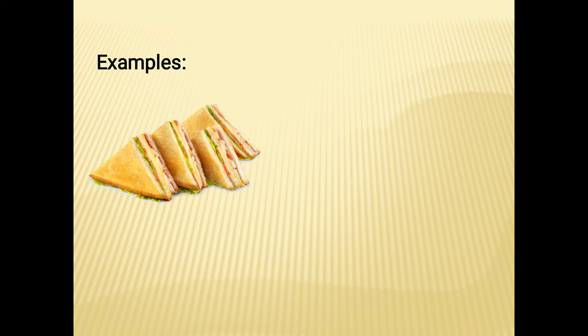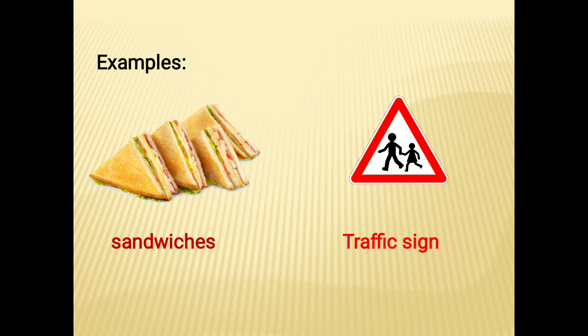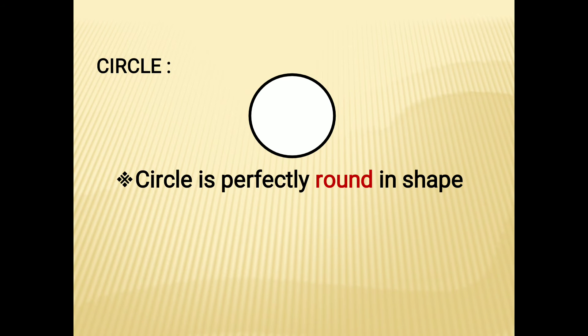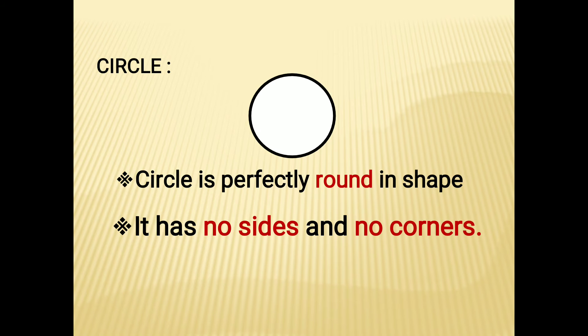Examples of a triangle are a sandwich and a traffic sign. The next shape is the circle. This is a circle. A circle is perfectly round in shape.